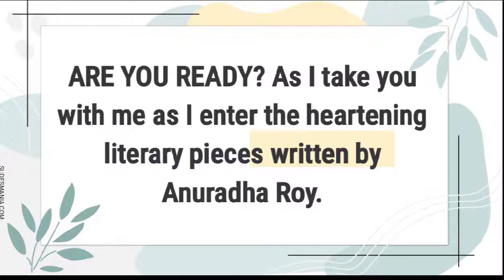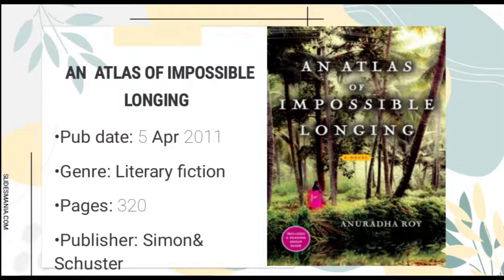Let's begin with the first novel entitled An Atlas of Impossible Longing. It was published on April 5, 2011. The genre is literary fiction, pages 320, and the publisher is Simon and Schuster. The novel is a story of loss, love, hope, longings, and desires. This novel has three parts of the book which correspond to three generations of the family. The first is Amulya, and the second is Kananbala.